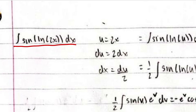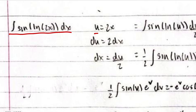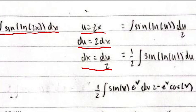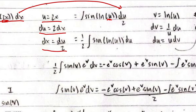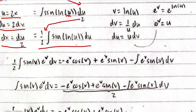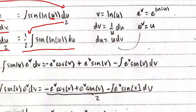The integral is sin(ln(2x)). The first step is a u-substitution: let u equal the inside, so u = 2x. Differentiating both sides and dividing by 2 gives dx = du/2. Then transforming the integral from the x-world to the u-world: dx is du/2, and 2x becomes u, giving us one-half times the integral of sin(ln(u)). The 1/2 is factored out front.